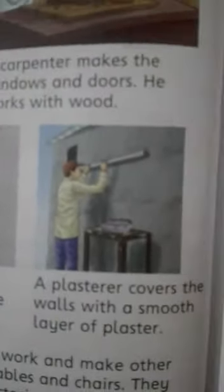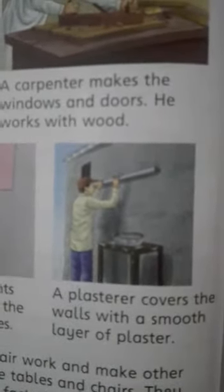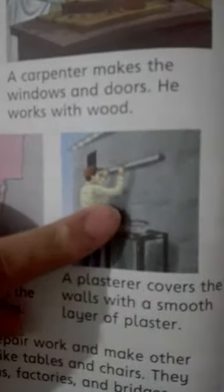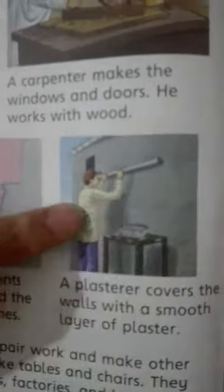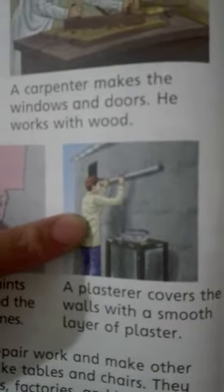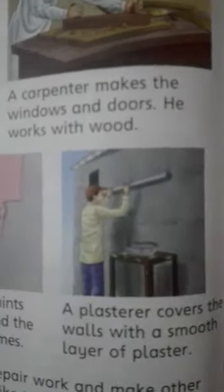A painter paints the walls and the wooden frames. Painter جو ہے وہ دیواروں کو paint کرتا ہے اور جو wooden frames ہوتے ہیں — walls اور windows کی — ان کو paint کرتا ہے۔ A plasterer covers the walls with a smooth layer of plaster. جیسے picture میں دیکھ رہے ہیں، یہ worker plaster کر رہا ہے — cement کے ذریعے دیوار کو smooth بنا رہا ہے، plaster layer لگا کر۔